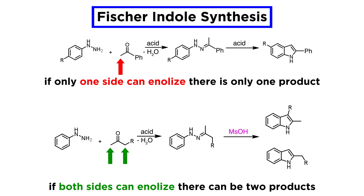When using strong acids like methanesulfonic acid, enolization tends to occur at the less substituted side of the ketone. If we assume we are dealing with an alkyl-methyl ketone, enolization at the methyl group will yield the major product, and enolization at the other side will give the minor product. The exact ratios depend on the identity of R and on the reaction conditions, with the preference eroding if weaker acids are used as catalysts. However, the trend we have just discussed is quite consistent.